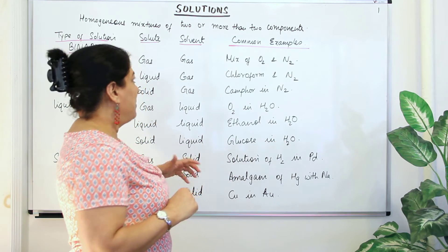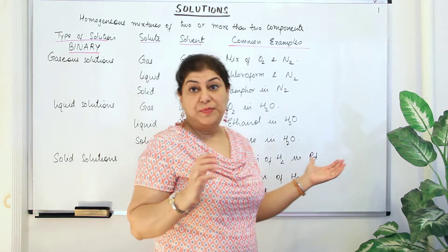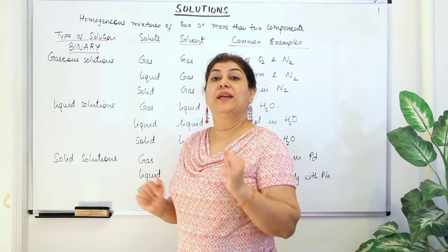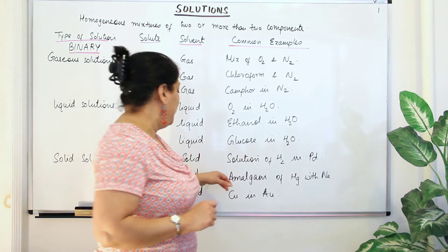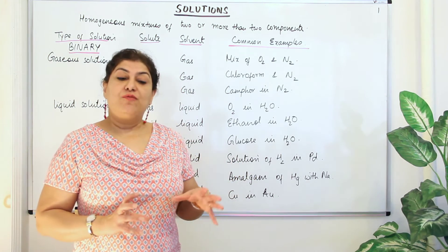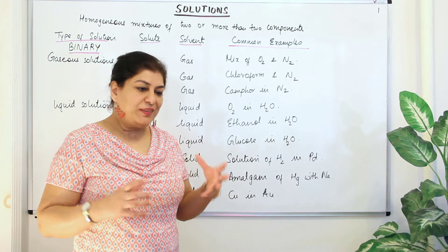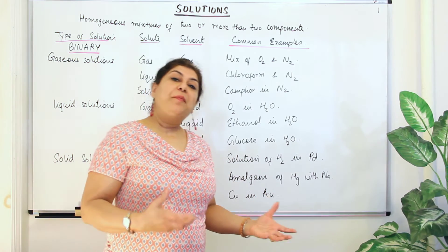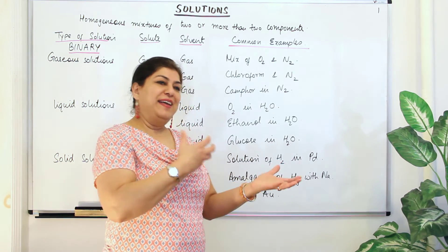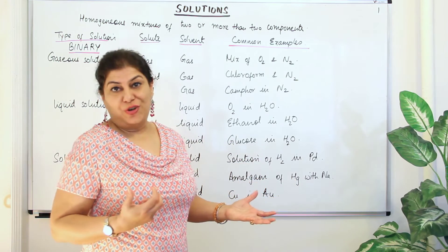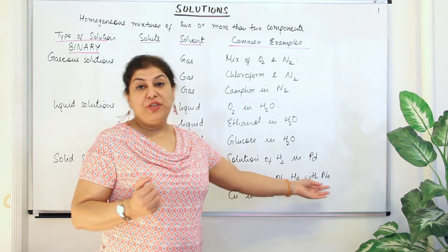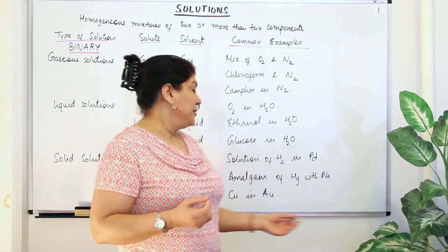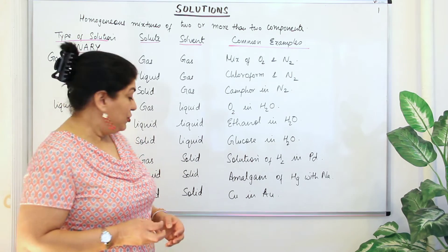The second type of solid solution is liquid in solid. All amalgams are examples of this — mercury is a liquid metal, so all alloys of mercury are known as amalgams. For example, sodium amalgam is mercury dissolved in sodium, making amalgams classic examples of a liquid-in-solid solution.